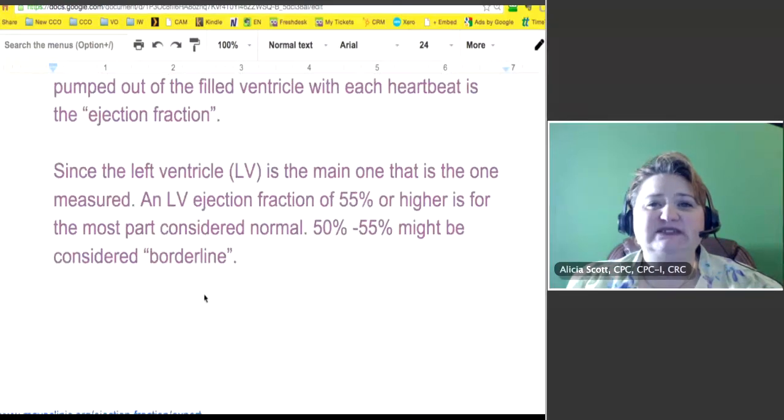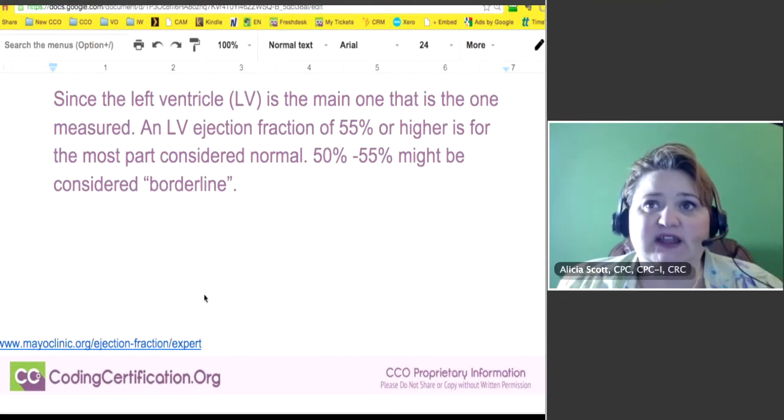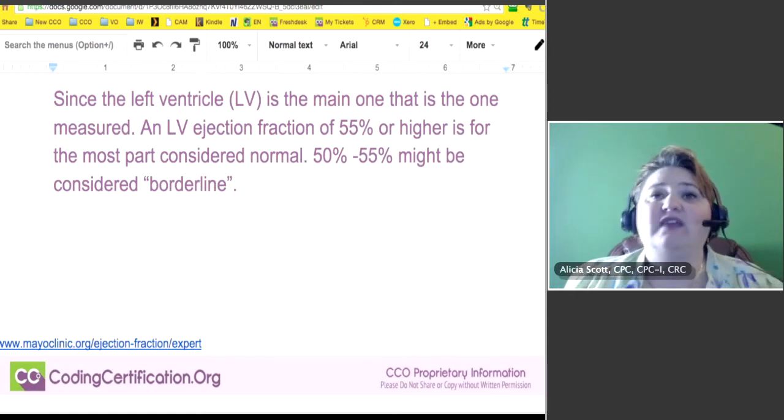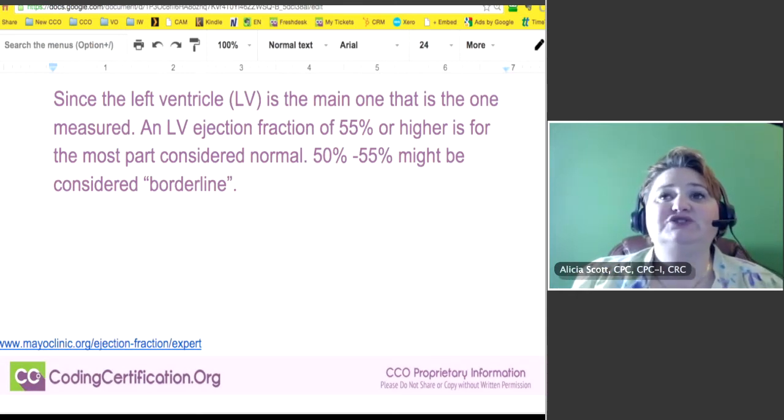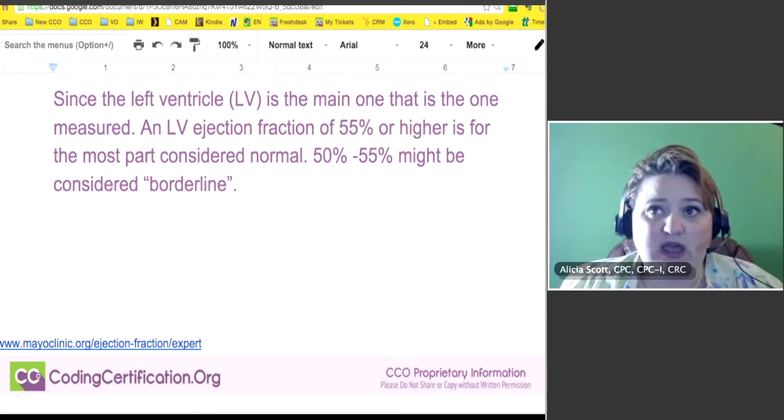we'll see that since the left ventricle, which is abbreviated as LV, you'll see it like that, is the main one and that is the one that's measured, the LV ejection fraction of 55% or higher is for the most part considered normal.